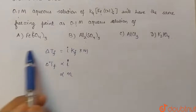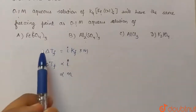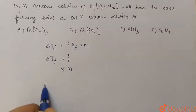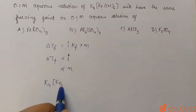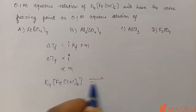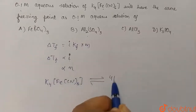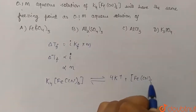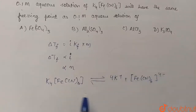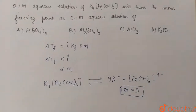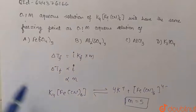The molecule with the same number of dissociated ions will be the answer. For K₄[Fe(CN)₆], it dissociates into 4K⁺ and [Fe(CN)₆]⁴⁻, so n equals 5, since it dissociates into 5 ions total. Now let's check the options.